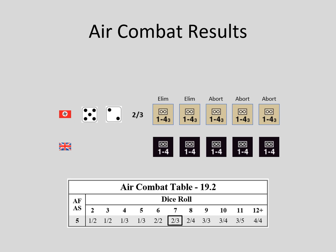The British player rolls an 11 for a 3-5 result. Three German army air factors are eliminated and five are forced to abort, although in a counter air that doesn't matter.